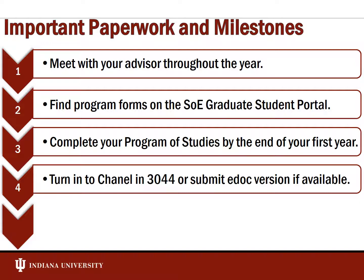Make sure you know where all the program forms are on the student portal. Your goal is to try to complete your program of studies by the end of your first year — it's kind of a contract of what you're planning to take. It doesn't have to be set in stone; you can always change it, but it's helpful for determining how many credits you're going to take and when. Any paperwork that needs to be turned into graduate studies has to go through our office. If you need a signature from the chair, that can go to me and the department can take it down for you. Also be aware that some documents are e-doc instead of paper.